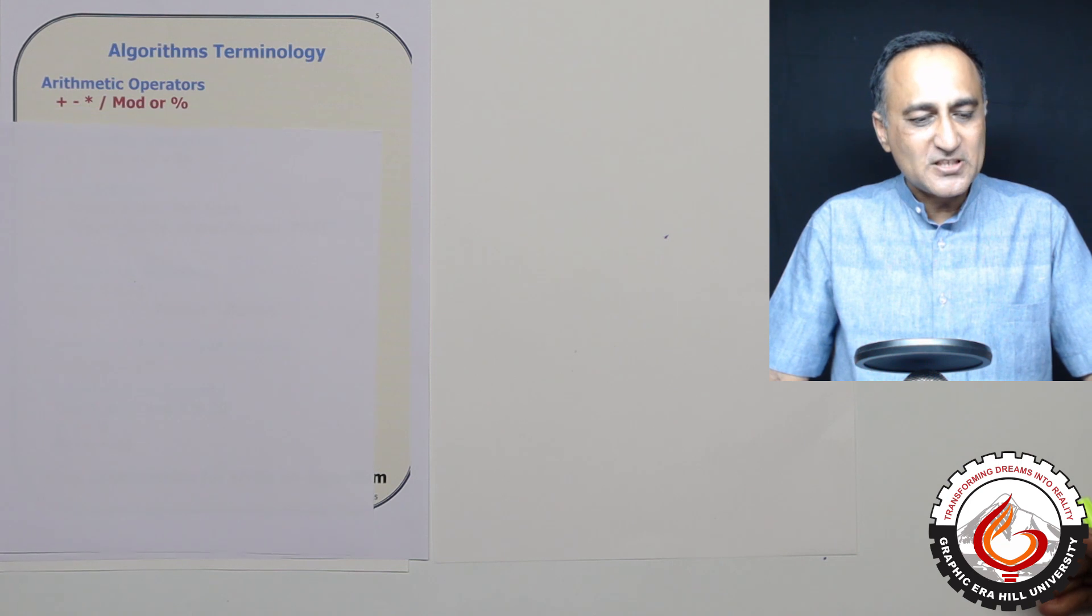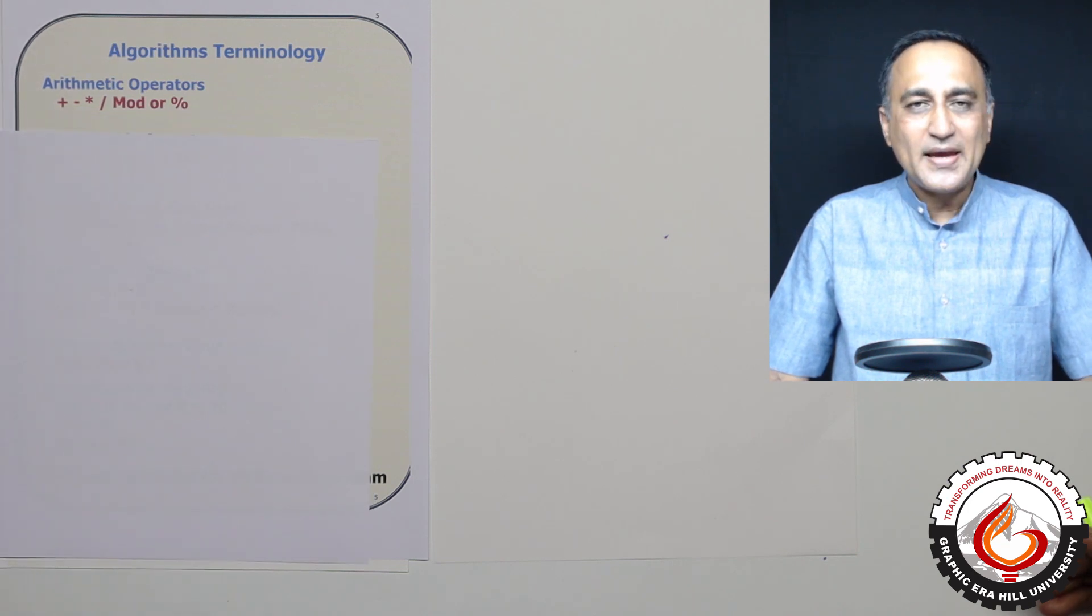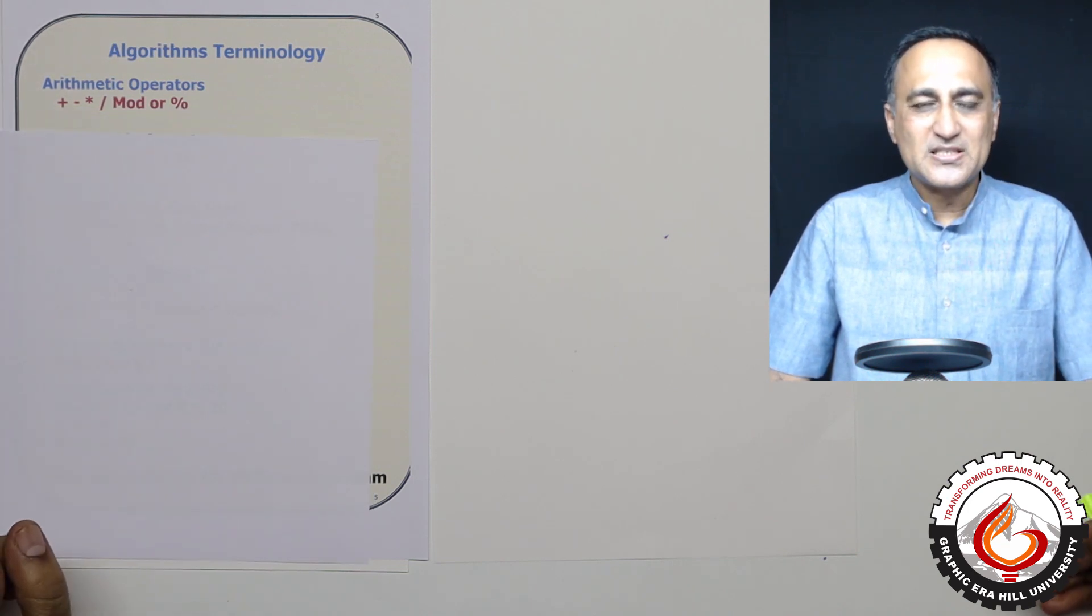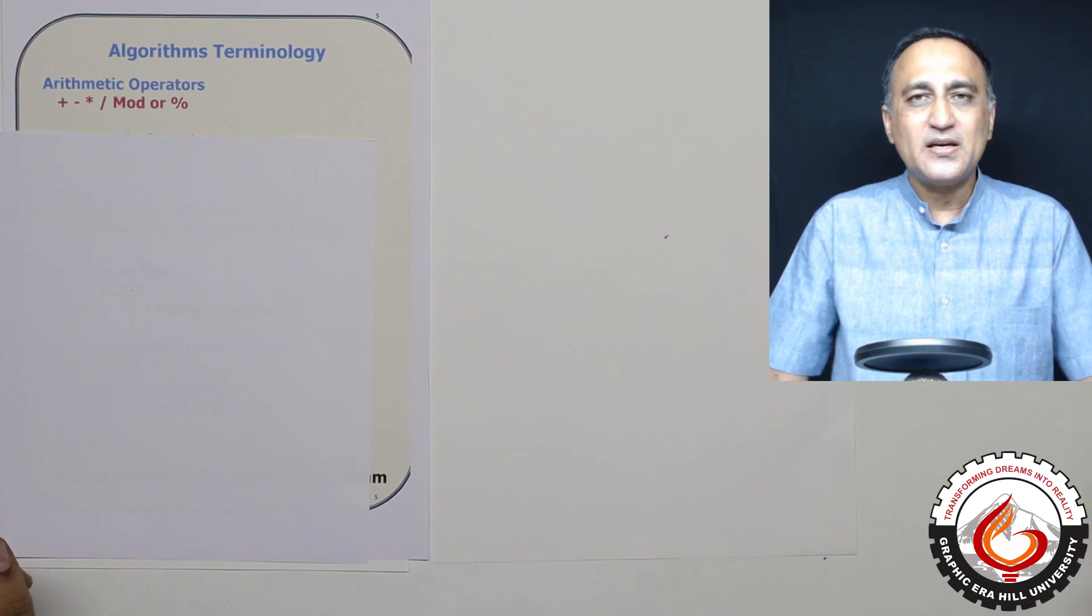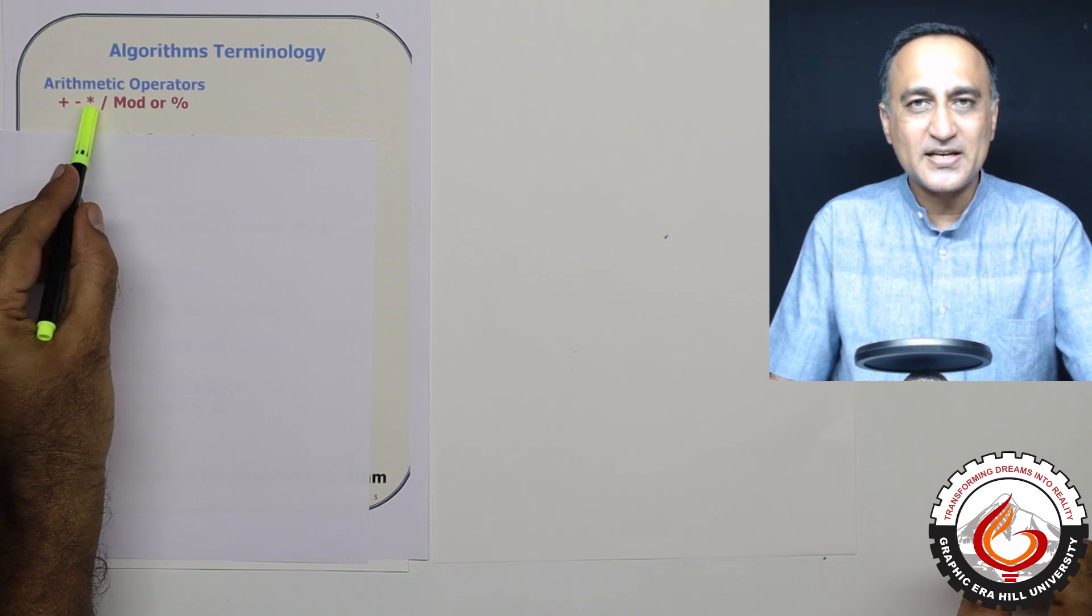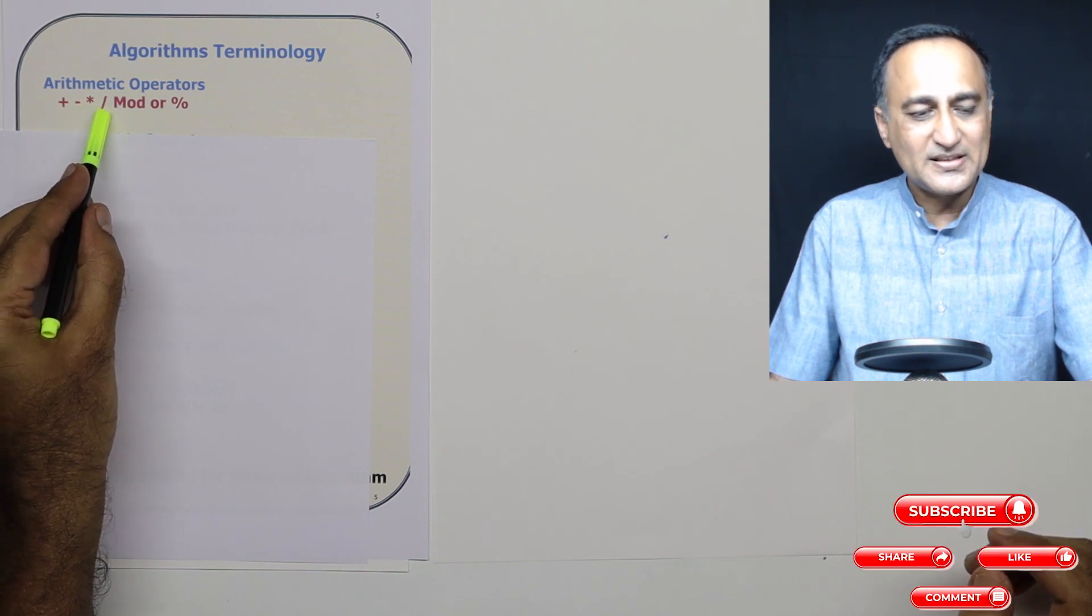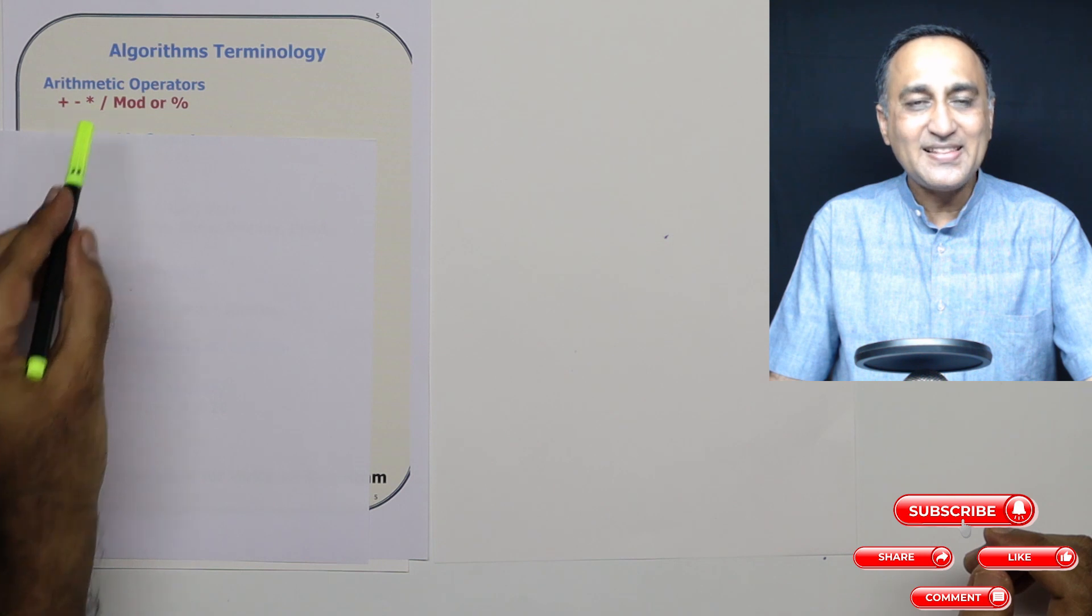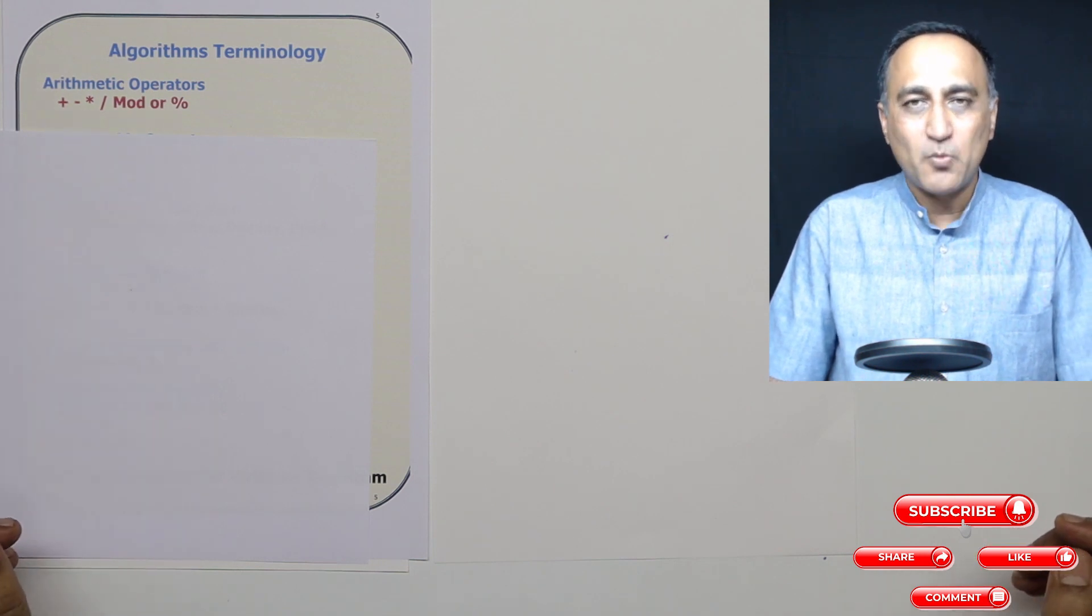The first thing is if I have to do any mathematical operations, I will be using the basic symbols of addition, subtraction, this star symbol stands for multiplication, this stands for division, and then there's a unique operator called mod.